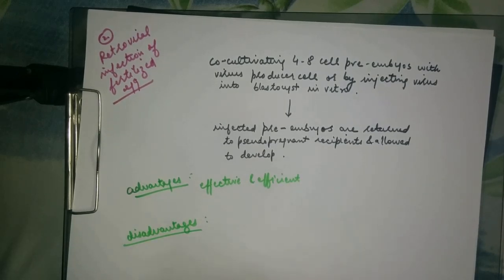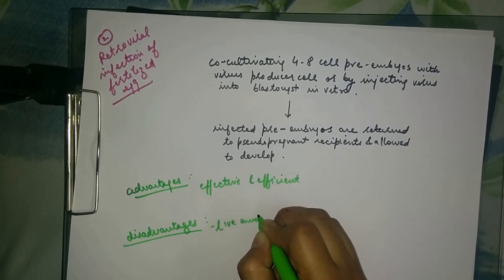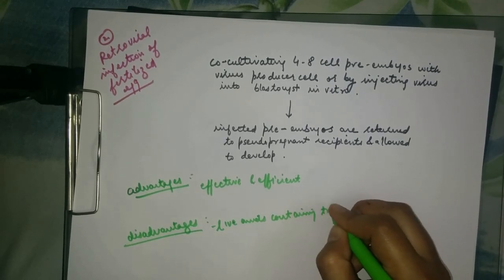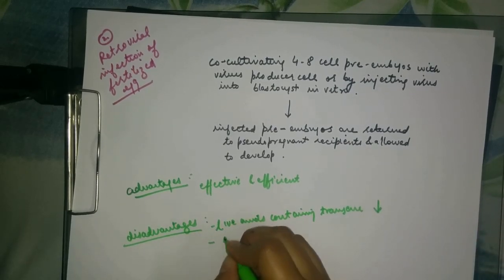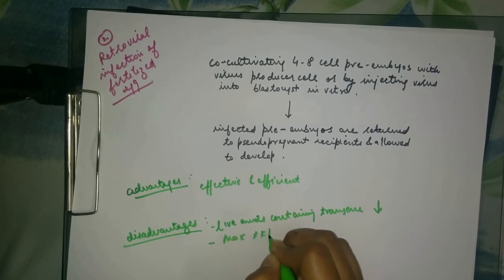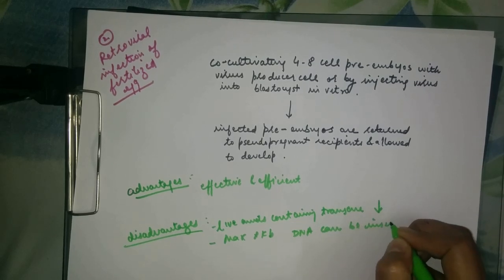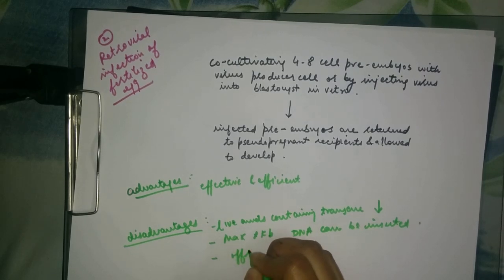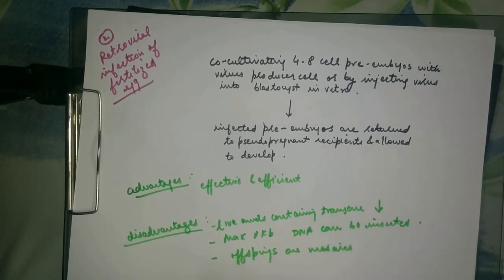The limitation or disadvantage is that the live birth animals, the live animals containing the transgene, is extremely low. And the maximum of 8 kilobases of exogenous DNA can be inserted into the retrovirus. And the third one is that the offspring are mosaics or genetic mosaics, because more than one cell in the embryo may be infected and the virus may integrate at various positions.